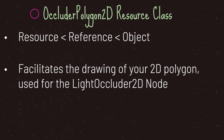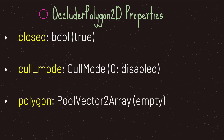The OccluderPolygon2D is a resource class and you're going to need to provide this resource to your LightOccluder2D node in order to get your shadows working. Basically the OccluderPolygon2D facilitates the drawing of your 2D polygon, which is used for the LightOccluder2D node. The OccluderPolygon2D comes with three properties: the first is the closed property, a boolean that defaults to true; the second is your cull mode, which needs a cull mode enum — the default value is zero meaning no culling will be applied; and the last property is your polygon, which holds all the points you provide and is ultimately used when creating or casting your shadow.